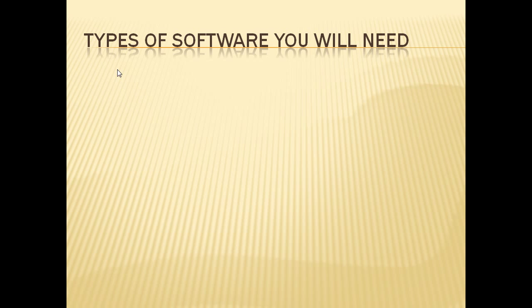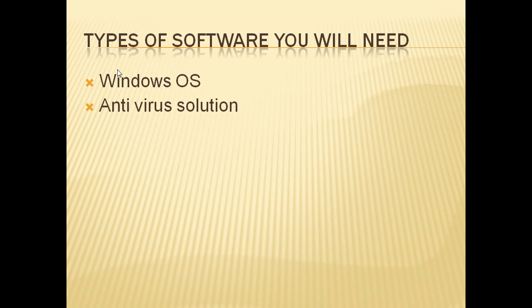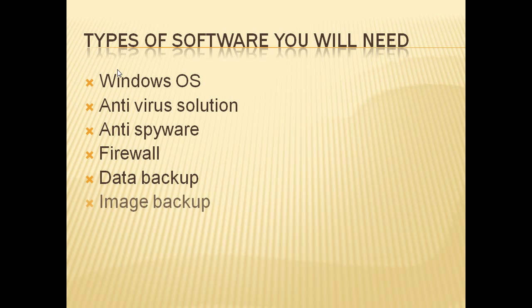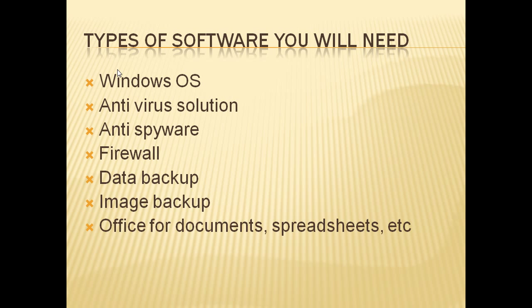Now let's see what types of software you will need to install on your computer. Number one, an operating system — if you buy used computers from brand names such as Dell or IBM, they may come with an OEM version of Windows. Number two, an antivirus solution to protect your computer from viruses and malware. Number three, a spyware protection suite. Number four, a firewall. Number five, a good backup solution for your data. Number six, image backup software to create and restore images from your DVD. Number seven, an office solution for documents, spreadsheets, and email. Number eight, IM software like Skype, ICQ, and software supporting SIP protocol.